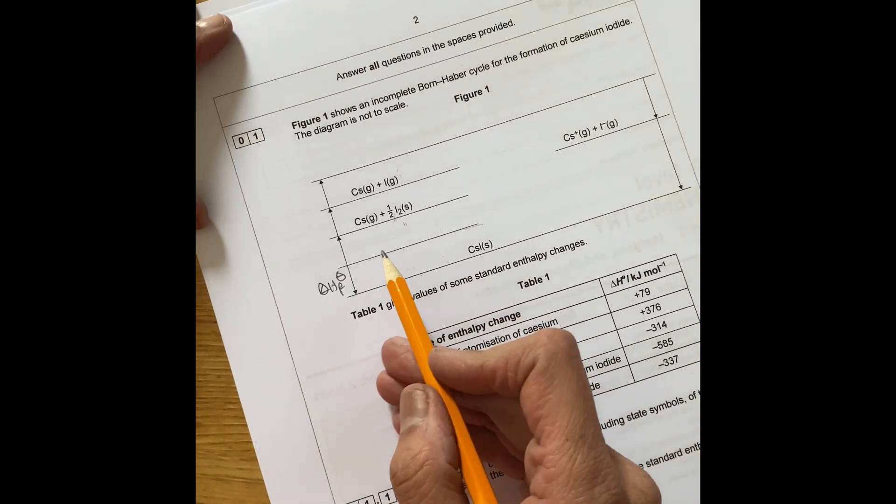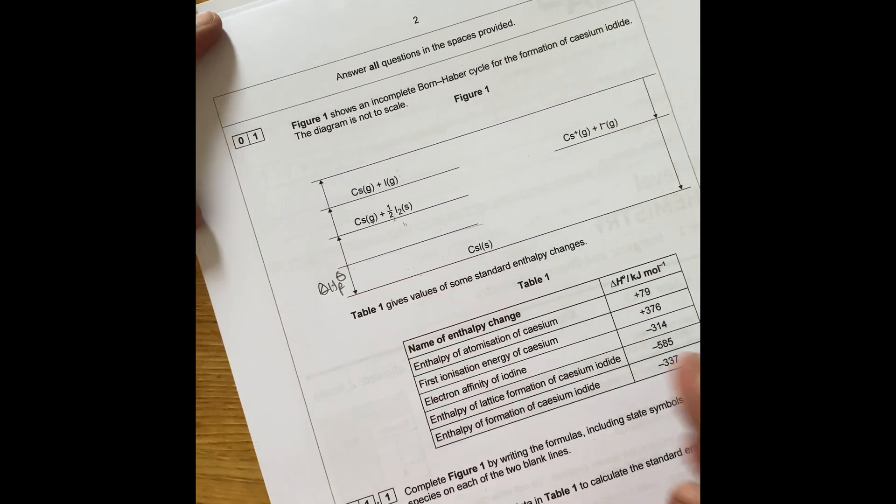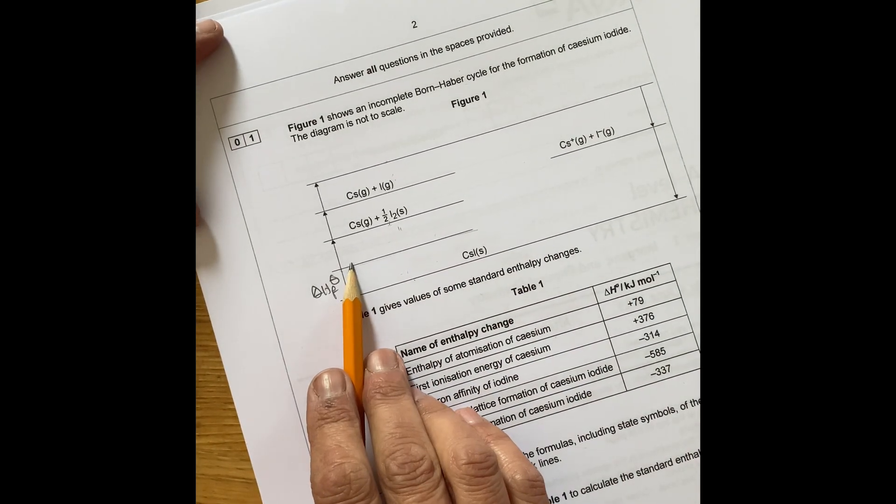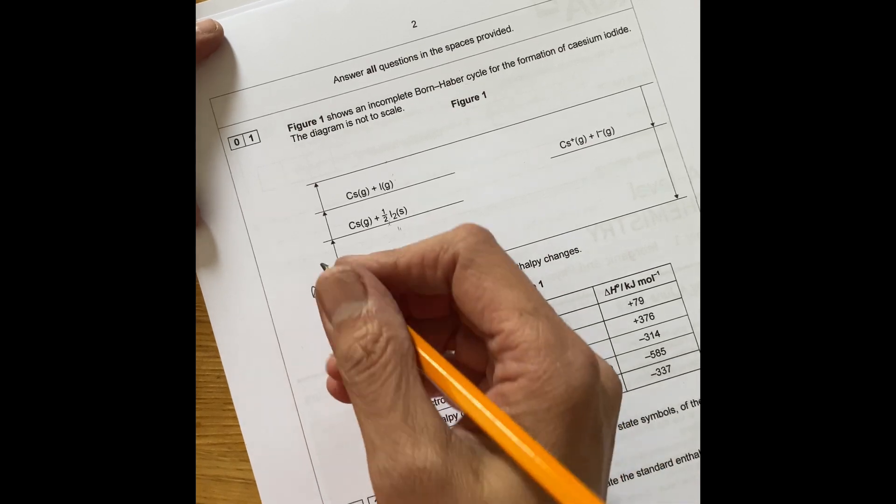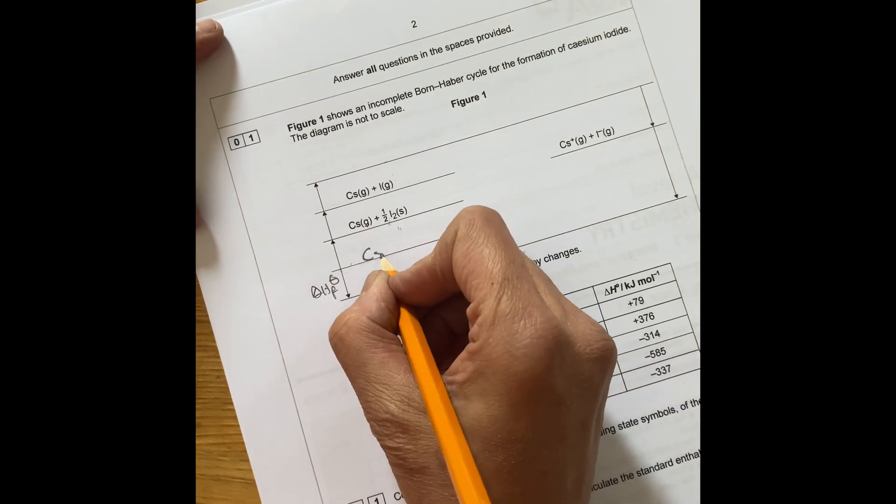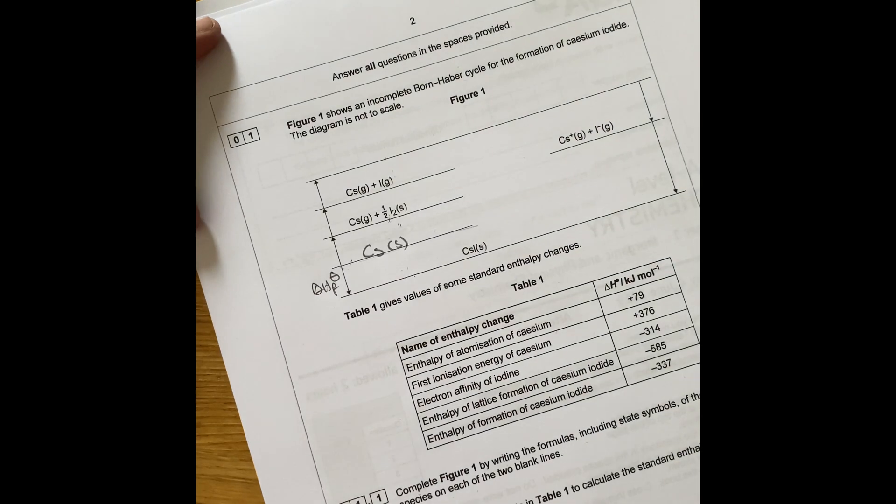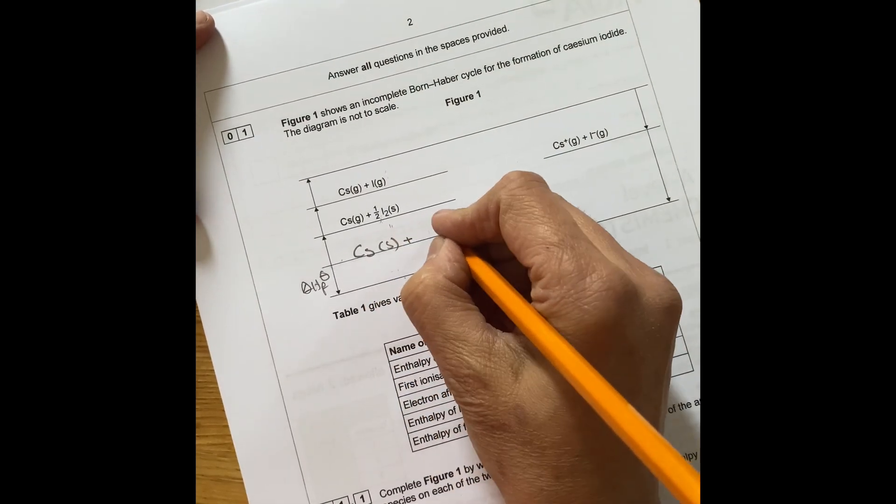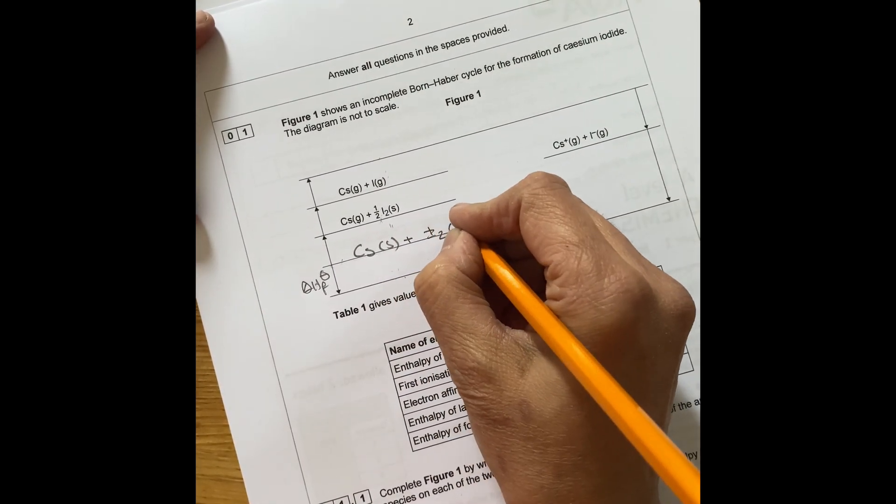So that means that because this cesium iodide is made from elements under standard states and standard conditions, the first thing you do is put cesium, which is a solid, plus iodine, which is a solid.